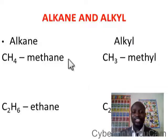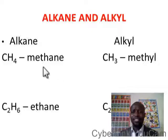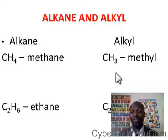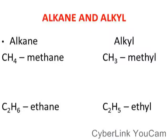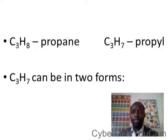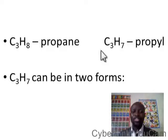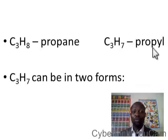If n equals 1 for CnH2n+2, this gives you CH4. For alkyl with n equals 1, it gives you CH3. For n equals 2, alkane gives C2H6 and alkyl gives C2H5. Moving on, we have C3H8 for propane, and the corresponding alkyl — propyl — is C3H7.